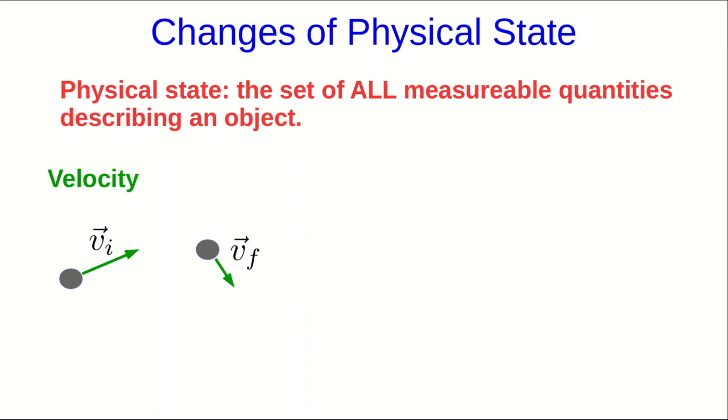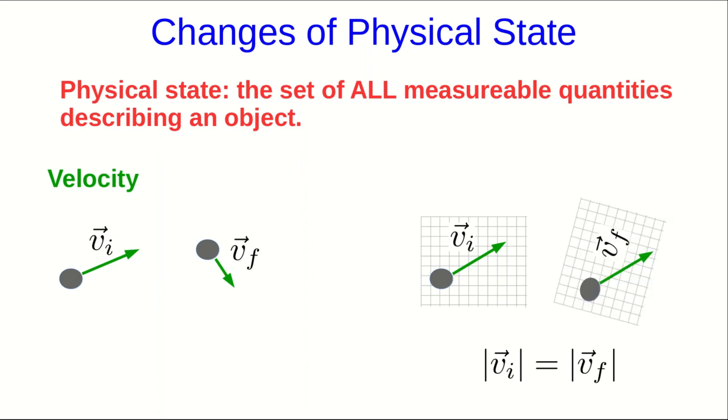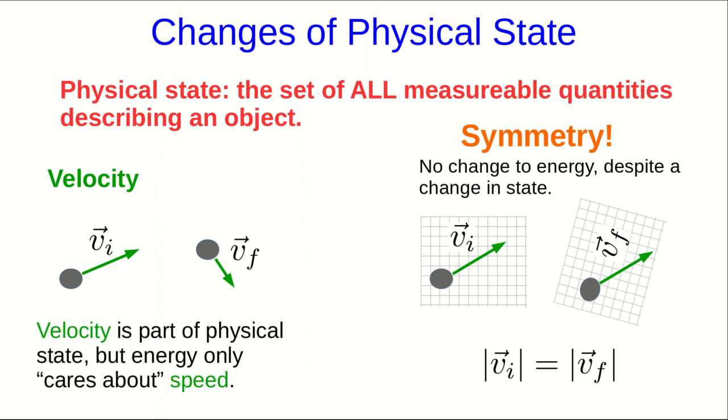Although there's a subtlety here when we're talking about energy. If we think about an object which changes its velocity but doesn't change its speed, so in other words, the magnitude of its velocity doesn't change, it turns out that the energy of the system doesn't change. This is because of symmetry. If you just rotate your perspective, the object doesn't appear to have changed. And so there's no change to the energy despite a change in state. So while velocity is part of the physical state,